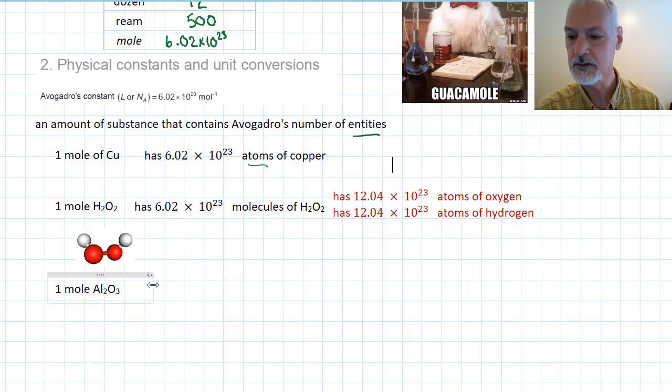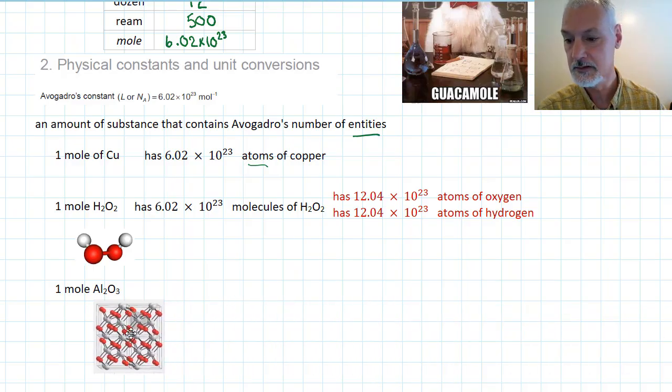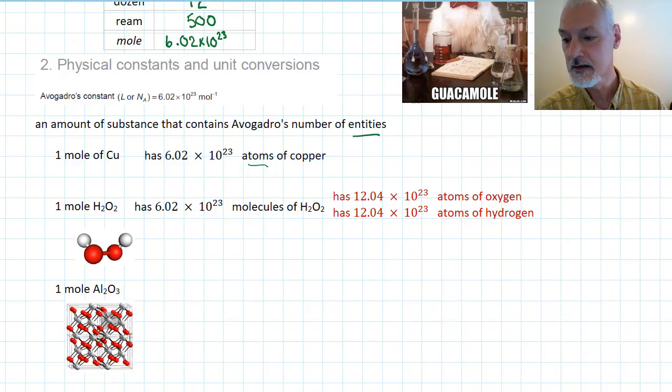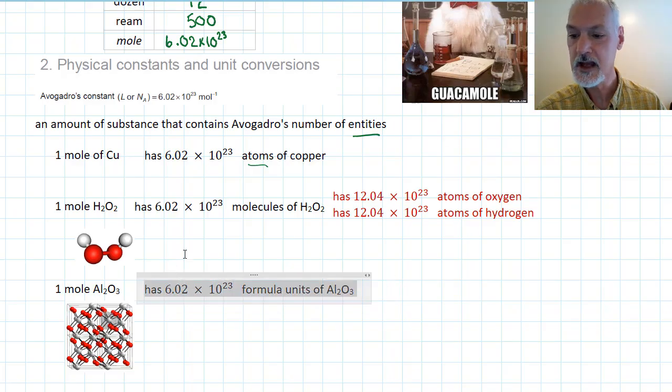Suppose I was given one mole of aluminum oxide. Now, aluminum oxide is not a molecule. It's what we call an ionic material made of a metal and a nonmetal. Here's a picture of what its crystal looks like. And the formula, aluminum oxide, refers to the ratio of aluminum and oxygen present in this crystal. So if I was given one mole of aluminum oxide, it would have what scientists would refer to as formula units of aluminum oxide, not a molecule because it doesn't exist as a molecule.